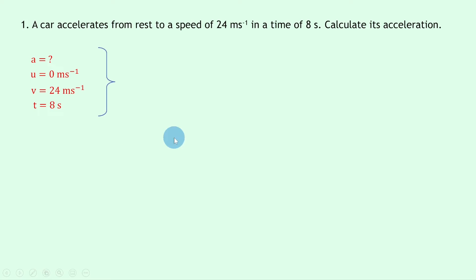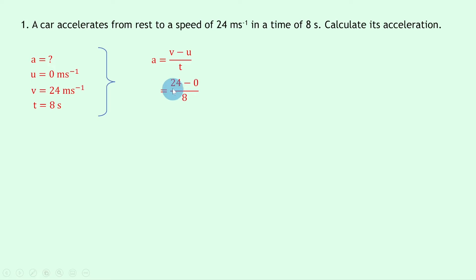Writing down our equation for acceleration, we have a equals v minus u over t. Substituting in the numbers gives us 24 minus zero divided by eight, and 24 divided by eight is the same as three meters per second squared.